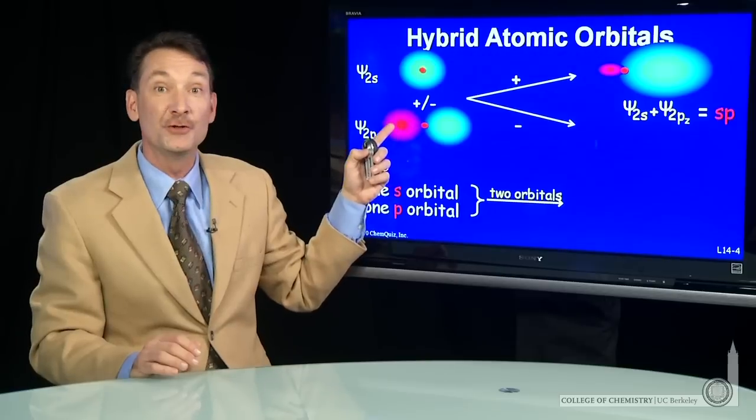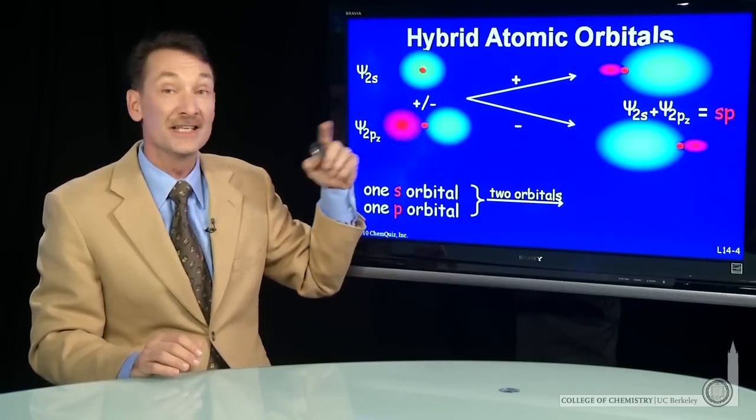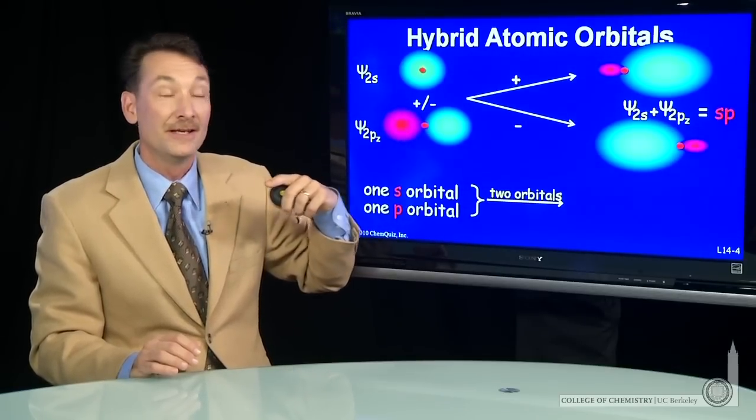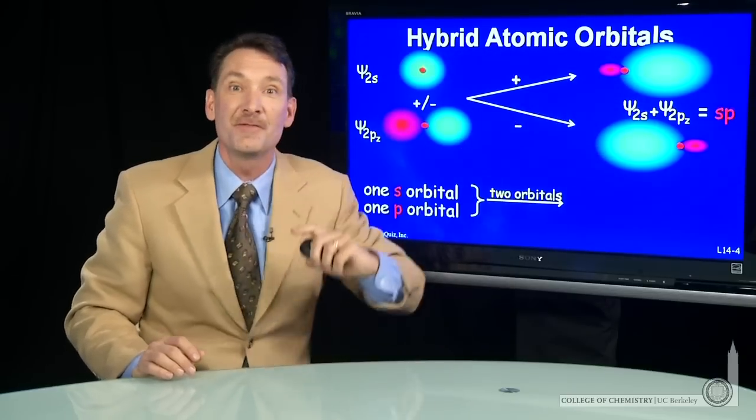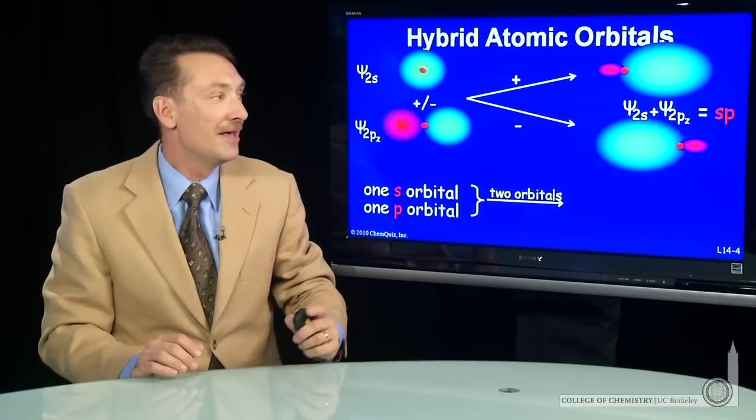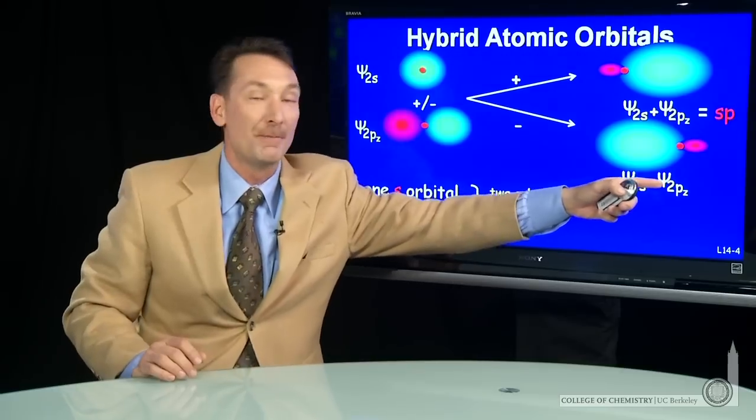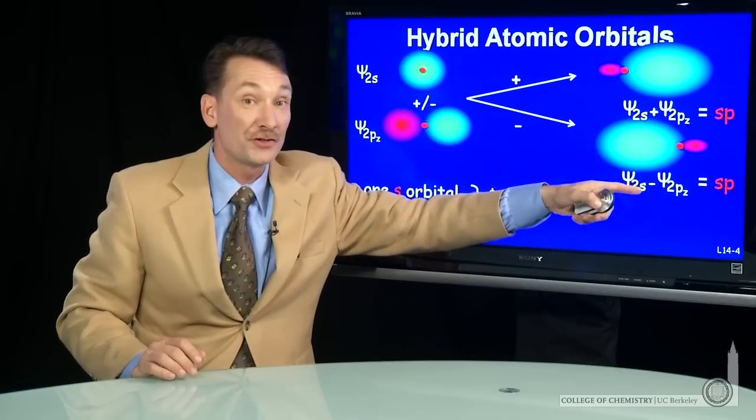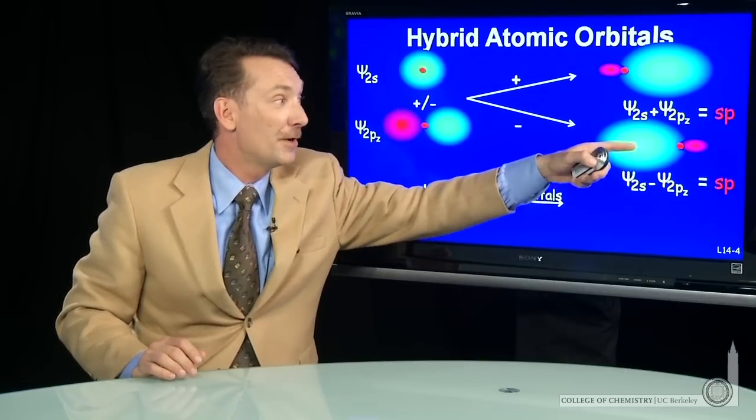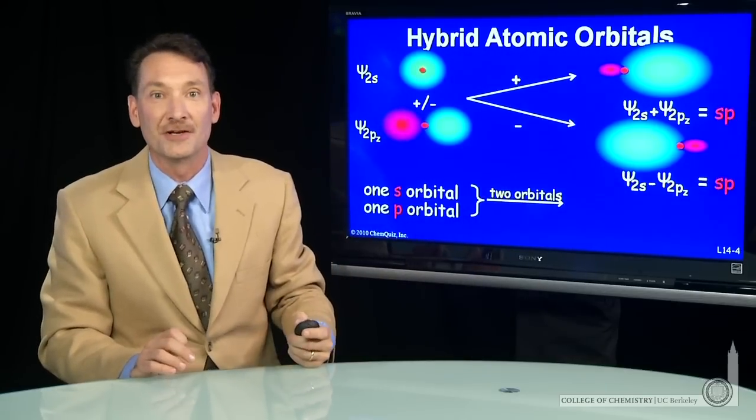And now I'll have high amplitude on this side. This side will become green, this side will become red, and I'll have high amplitude on this side, 180 degrees from this high amplitude. This is a combination of S minus the Pz. And that combination is also an SP orbital, but 180 degrees from my original SP.